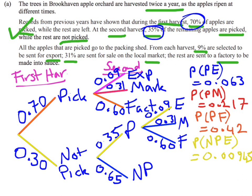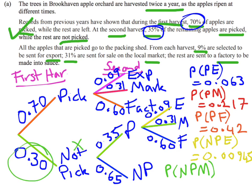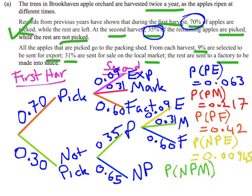Next combination: not picked first harvest, picked at the second harvest, then sent to market. That's 0.3 × 0.35 × 0.31 = 0.03255.